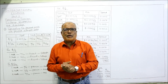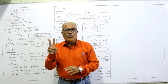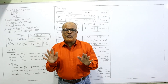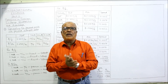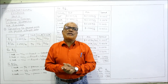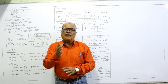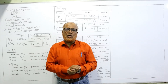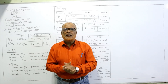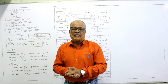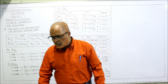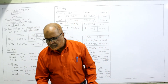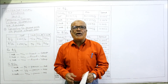So by doing the last problem and this problem — two problems — that will be more than enough to get command on how to convert forward points into forward outright rates and calculate the spread.